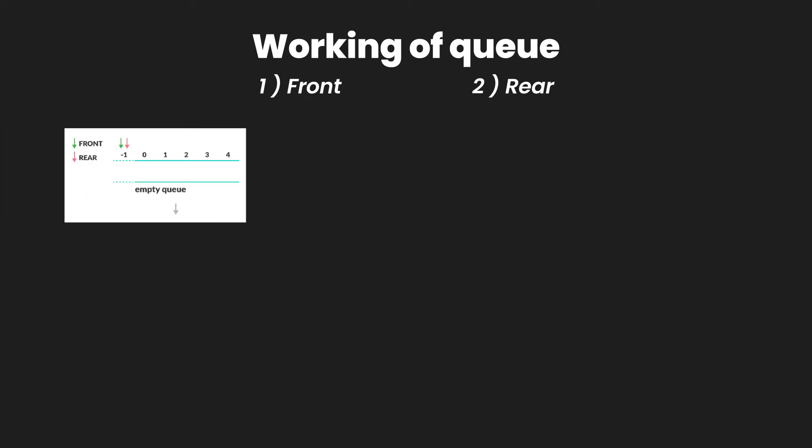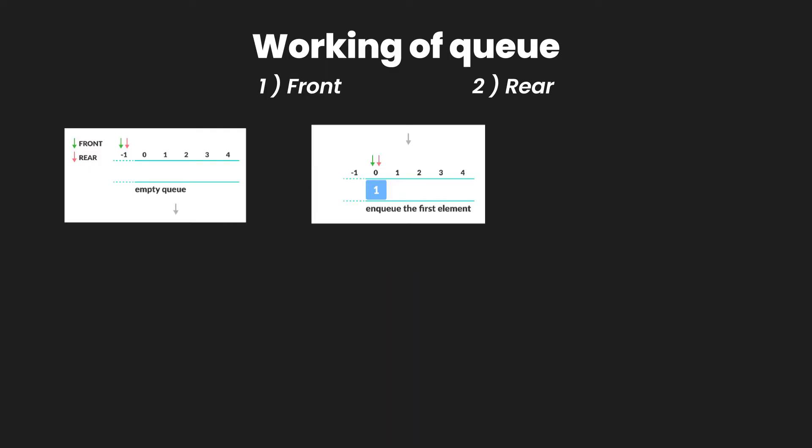So how does a queue work? We have two pointers: the front pointer and the rear pointer. At the start they both point at index negative one. When the first element is placed in the queue it goes at index zero, and both the front and rear pointers are changed to zero — so both pointers are pointing at the first element.